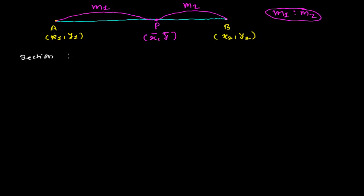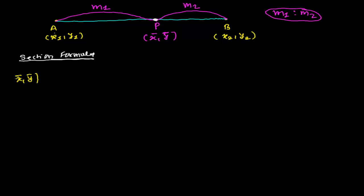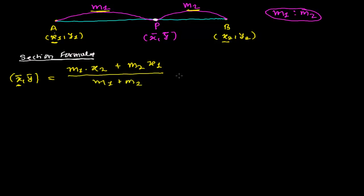Let's talk about the section formula first. The section formula tells us how a point P divides line AB into two parts — part AP and part PB. If the ratio is m1 : m2, then the x-coordinate x̄ is given by: x̄ = (m1·x2 + m2·x1) / (m1 + m2). That finishes the x̄ part.